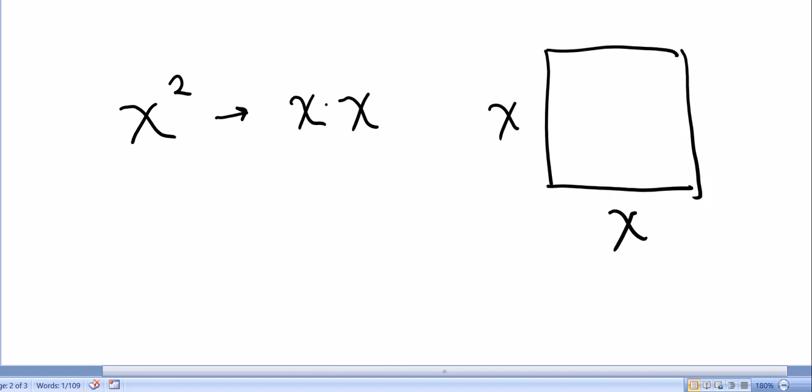Now if we had a square, notice how I said the word square, squared. If we had a square that had dimensions x by x, so it was x tall and x wide, then the area of this square would be x squared. And there's no coincidence that we just use that word multiple times, square.